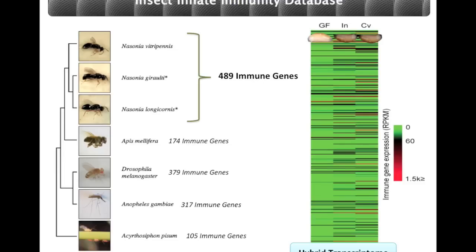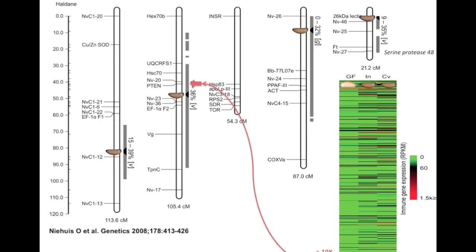This is a germ-free hybrid that lives — here are the ~500 immune genes that are expressed. This is an inoculated hybrid and a conventional hybrid, both of which die. The immune genes in the germ-free hybrid are hypo-expressed relative to the dead hybrids. About 40% of the genes are mis-expressed at a two-fold level, either up or down, relative to the dead hybrids. So there's a lot of immune dysfunction, which makes sense because the microbial community is also dysregulated. In future work, we can take candidates mis-expressed in germ-free versus dead hybrids and map them back to QTL regions as candidate genes that may interact with the microbiome in an epistatic way to cause mortality.